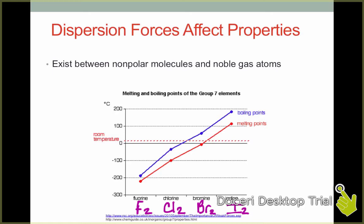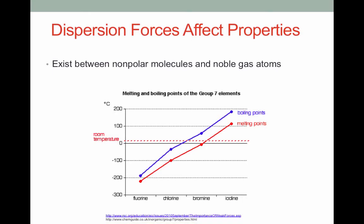Notice that as we increase the number of electrons present in the substance, the boiling point and the melting point of these substances increases. This is due to the increasing strength of dispersion forces. The more electrons you have in a molecule, the more easily distorted its electron cloud will become, and therefore the stronger its dispersion forces will be.